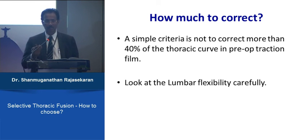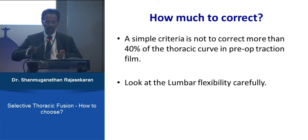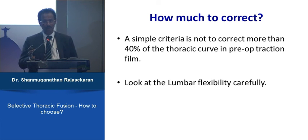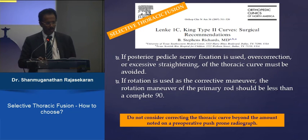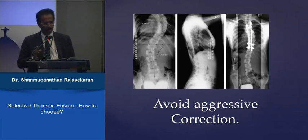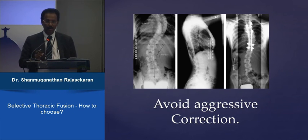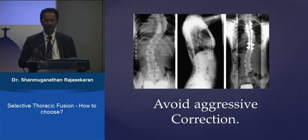The second technical mistake is overcorrecting the thoracic curve. When using pedicle screws with modern derotation and correction techniques, it is easy to make the thoracic curve too straight, causing the lumbar curve to decompensate. Excessive straightening must be avoided and complete derotation should not be performed. The thoracic curve should not be corrected beyond what the lumbar curve can accommodate — never make the thoracic curve too straight when doing selective thoracic fusion.